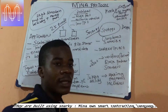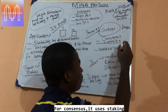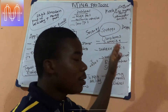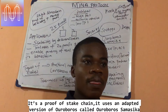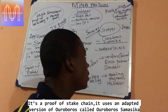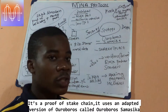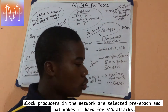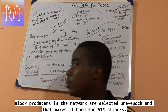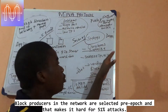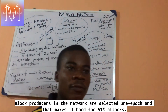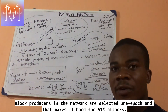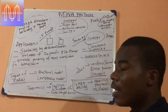For consensus, Mina uses the Ouroboros family of consensus mechanisms, and it has its own improved version called Ouroboros Samasika. With Ouroboros Samasika, the block producer is selected pre-epoch, which makes it very hard to perform long-range attacks on the network.